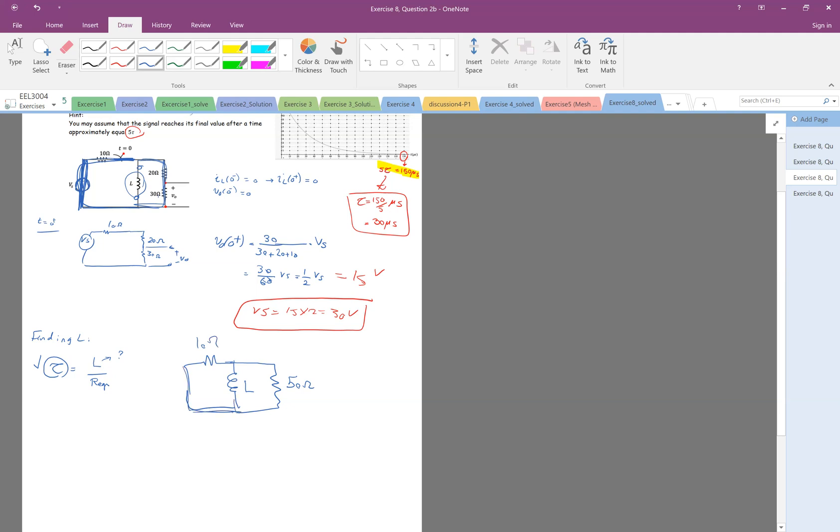So from the point of view of L, it sees a 10 ohm and a 50 ohm. And this 10 and this 50 are in parallel. This is 10 times 50 divided by 10 plus 50, which is 500 divided by 60, which is 50 divided by 6. This is R equivalent.